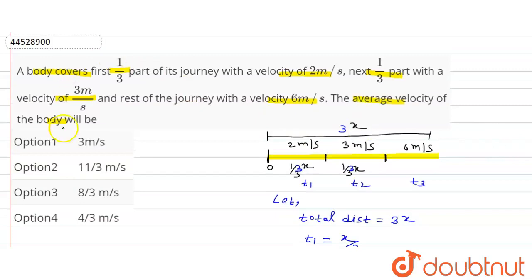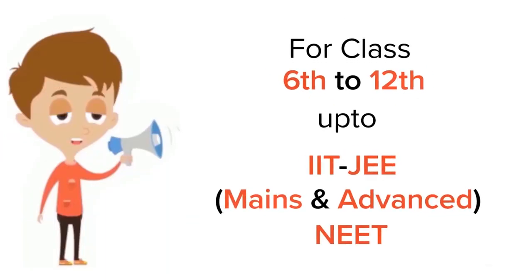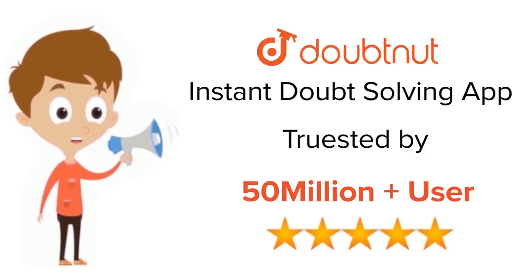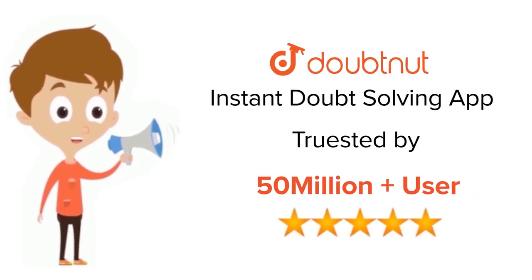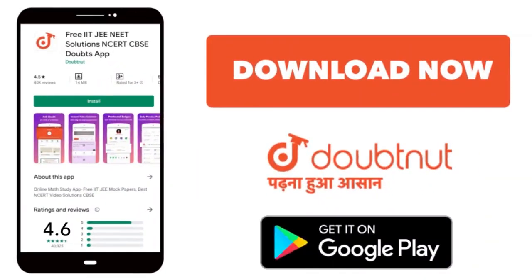Option one is the correct answer: 3 meters per second. Thank you. For class 6 to 12th, IIT JEE, and NEET level, trusted by more than 5 crore students — download the DoubtNet app today.